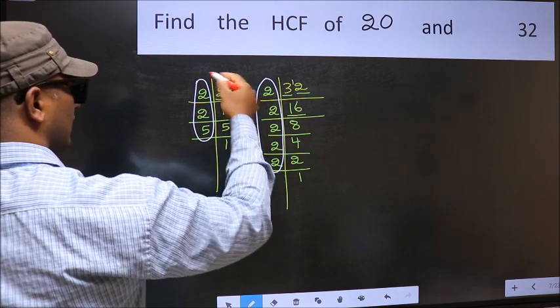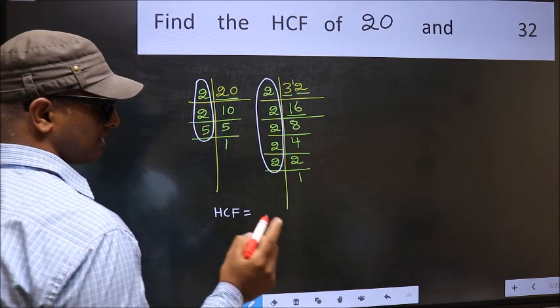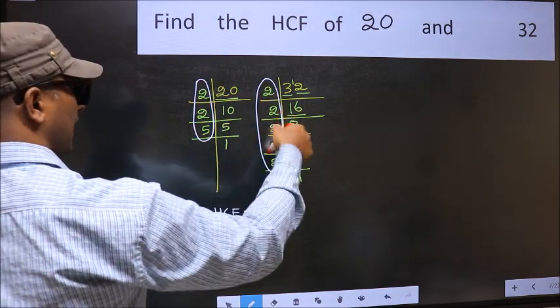Here and here. So now let us find the numbers which should be present here and here.